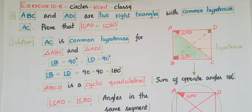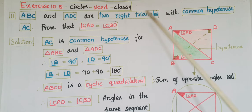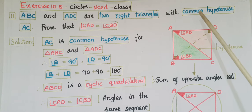Hello everyone, today I am going to tell the solutions of the 11th and 12th problems from Exercise 10.5 from the Circles chapter from NCERT Class 9. Here is the 11th problem: ABC and ADC are two right triangles with common hypotenuse AC.